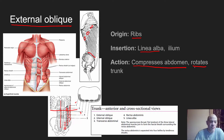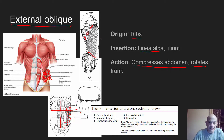Looking at this image, we see the rectus abdominis in the center and the external oblique as the outermost layer on the sides. The next layer in would be the internal oblique — which, by the way, is not on your list. Then the transverse abdominis is the innermost layer. Notice that the direction of the fibers of the external oblique is running sort of downward.